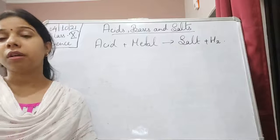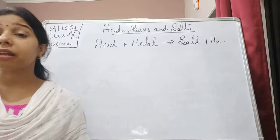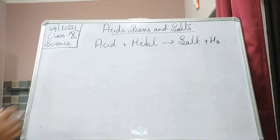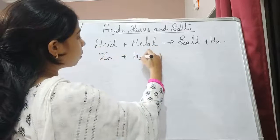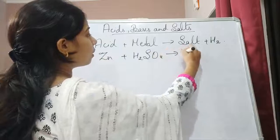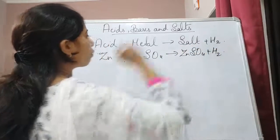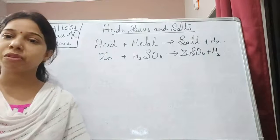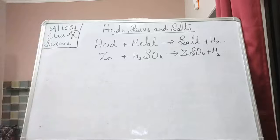With the help of the pop sound, we are able to detect that the gas evolving from it is hydrogen gas. And the test tube is consisting of the salt which is zinc sulfate. So zinc reacting with sulfuric acid gives zinc sulfate plus hydrogen gas. Any acid reacting with a metal produces salt and hydrogen gas.